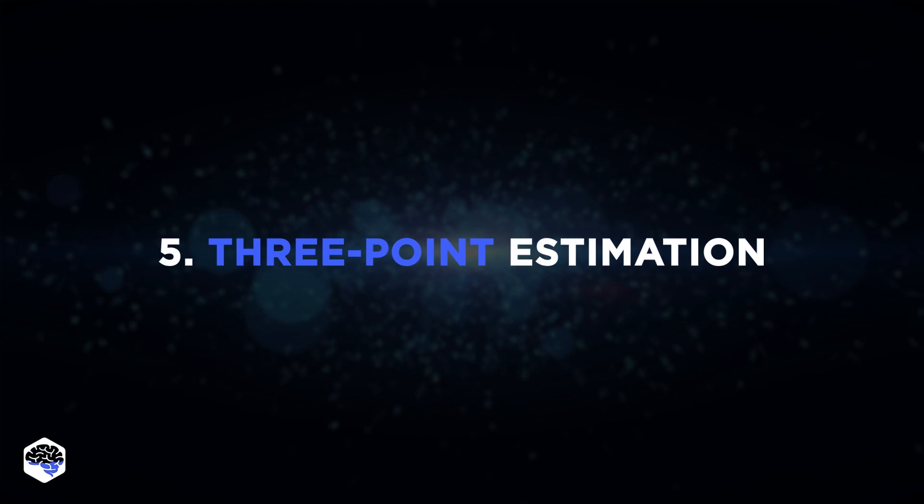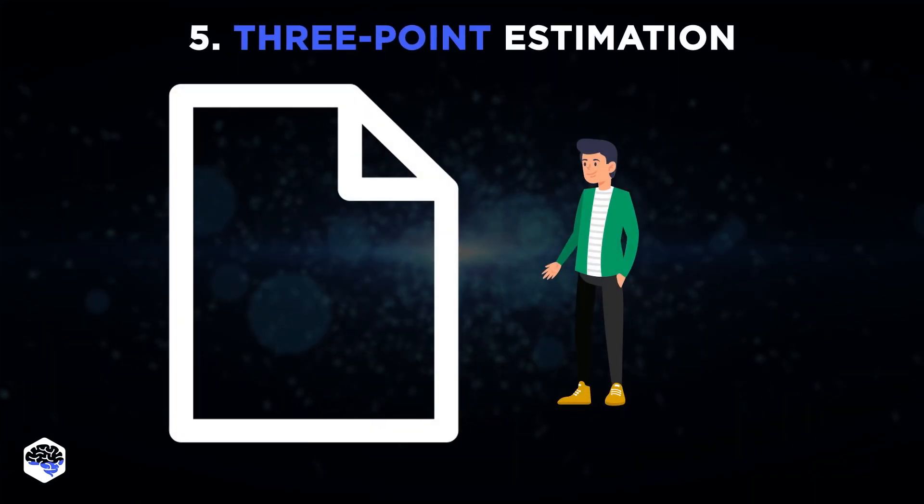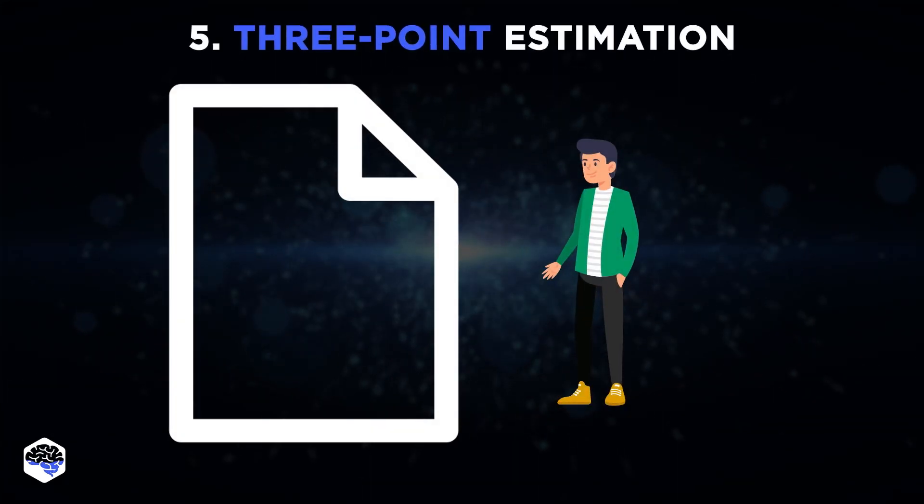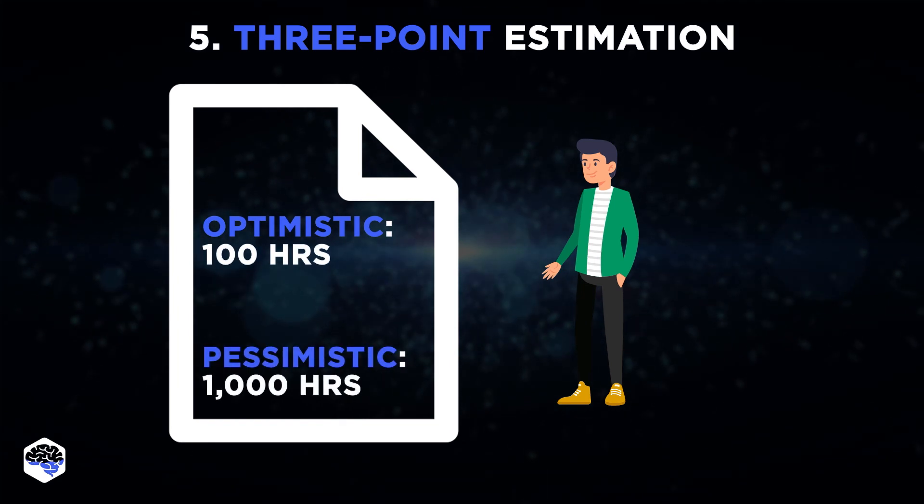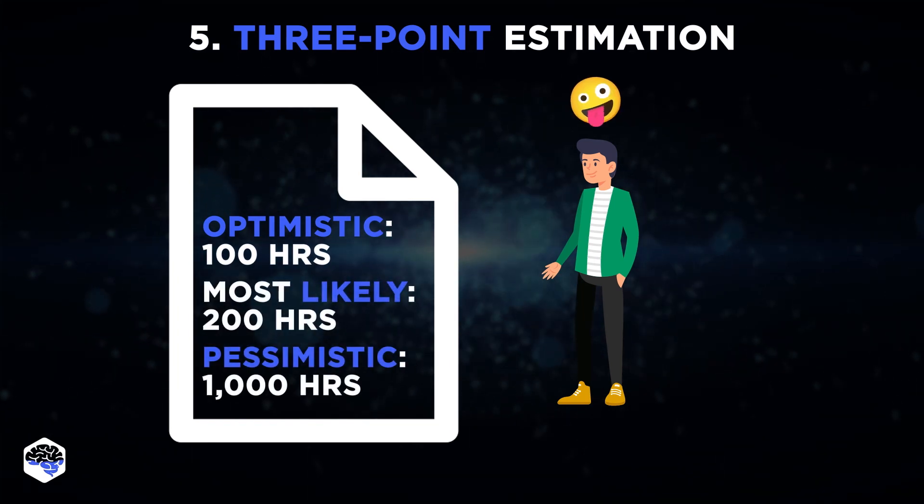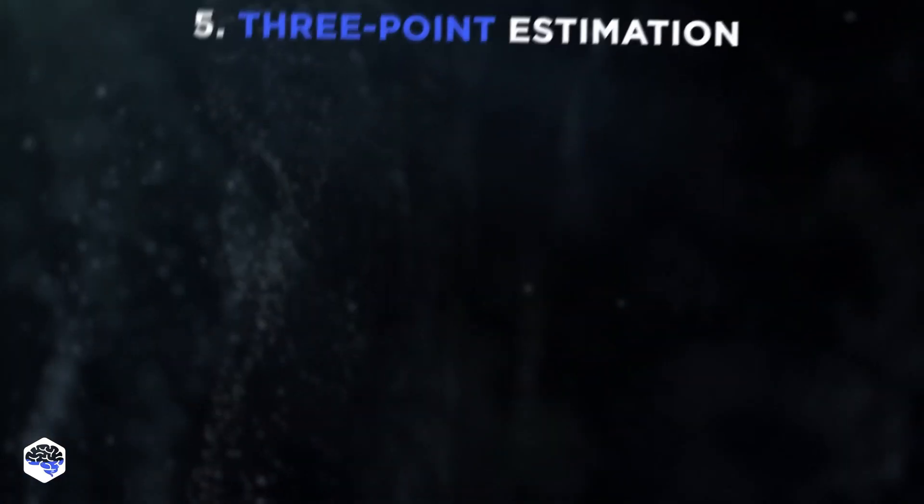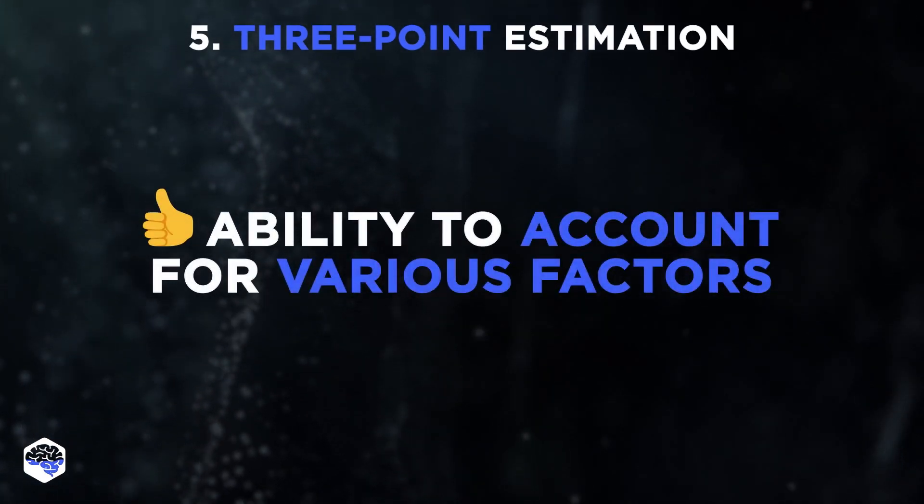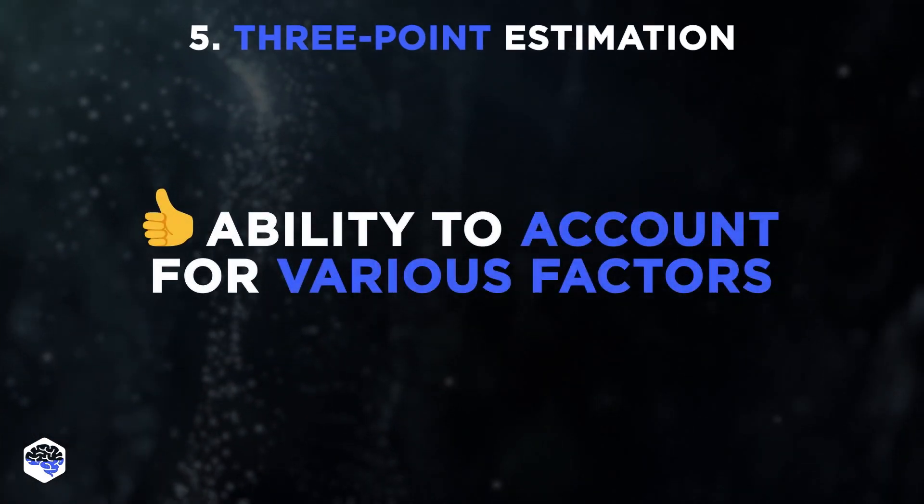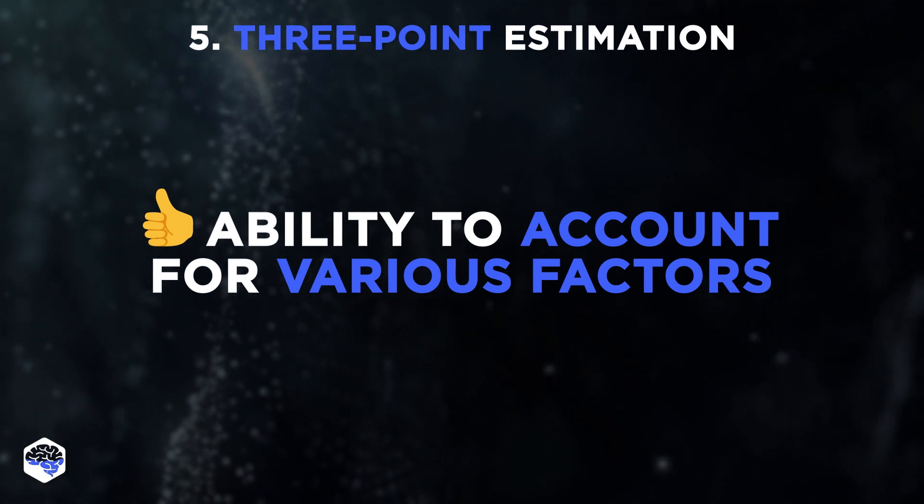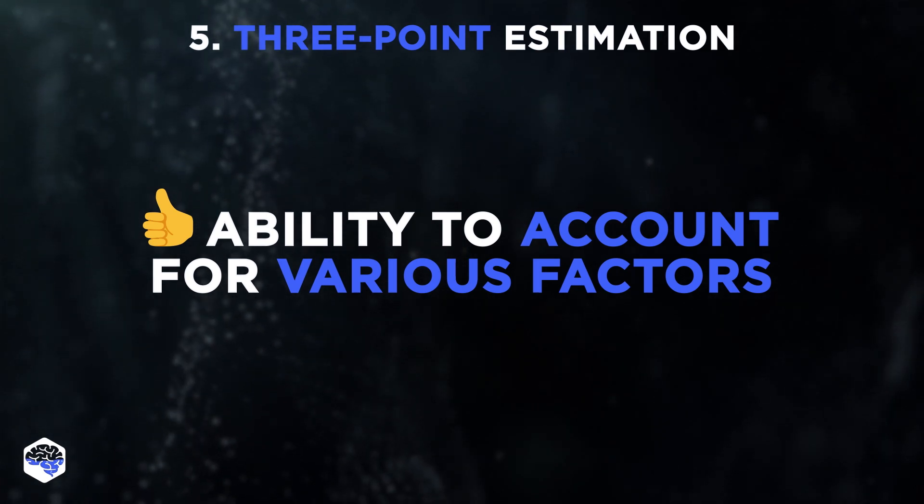The fifth method is the Three-Point Estimation. This concept comprises three valuation points, such as Optimistic, Pessimistic, and most likely Cost Estimate. The best thing about the Three-Point Estimation is its ability to account for the uncertainty of project lead times and various factors that can slow down or speed up the progress of a project.